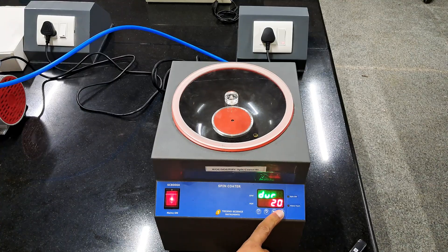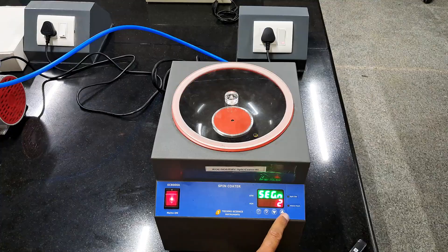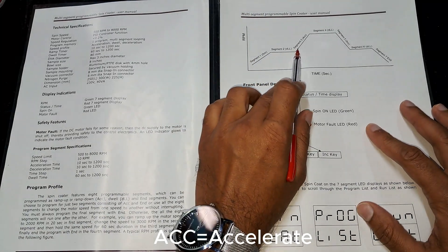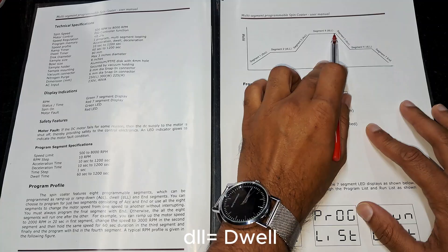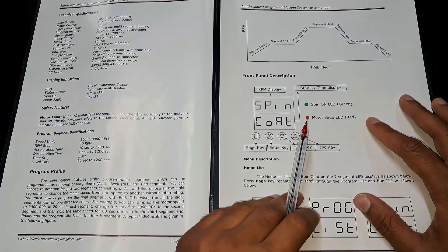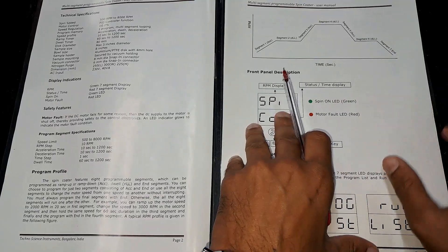The first segment is acceleration, second is the dwell which means constant speed, third one is acceleration, fourth one is dwell, fifth one is deceleration, dwell and deceleration.